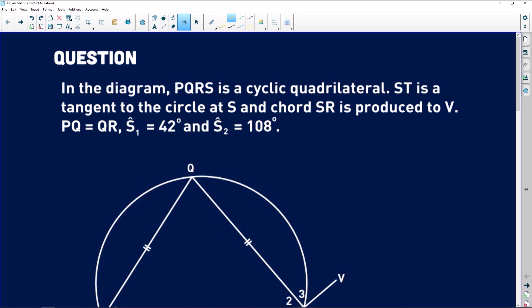So, let's take a look at this first question. It says, in the diagram, PQRS is a cyclic quadrilateral.